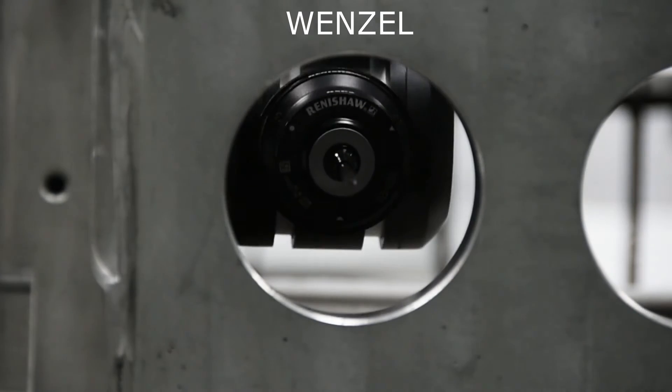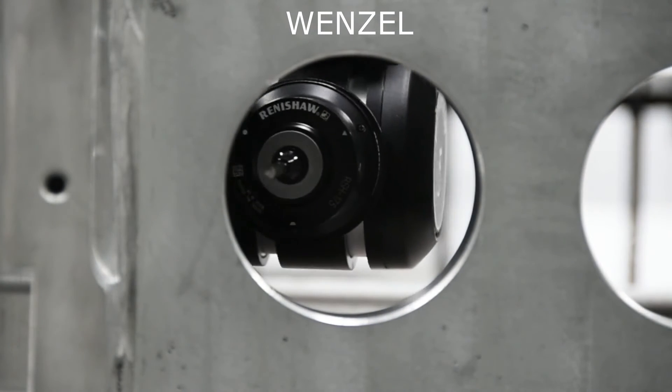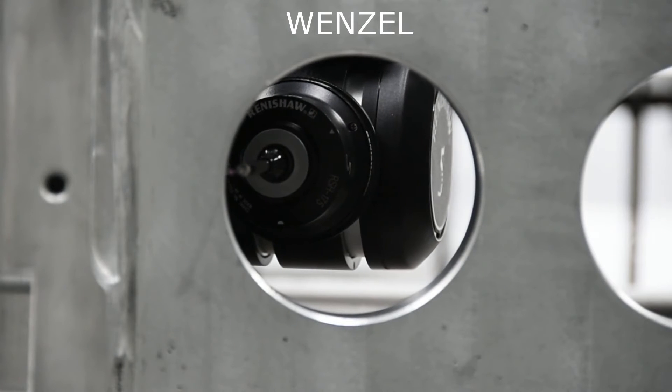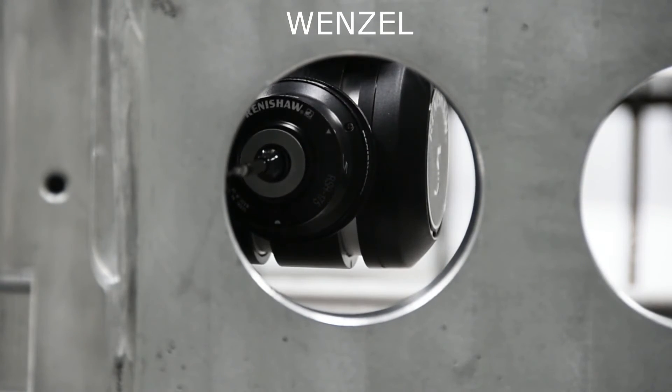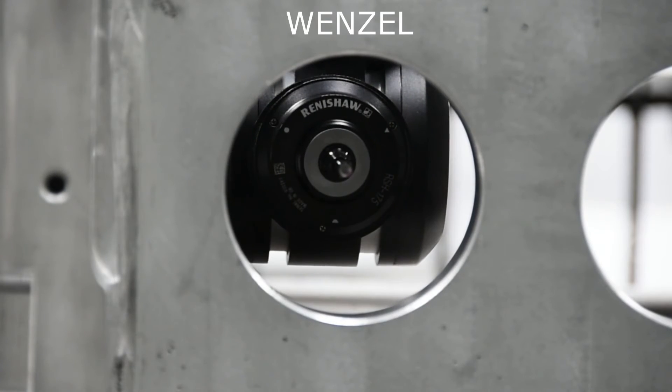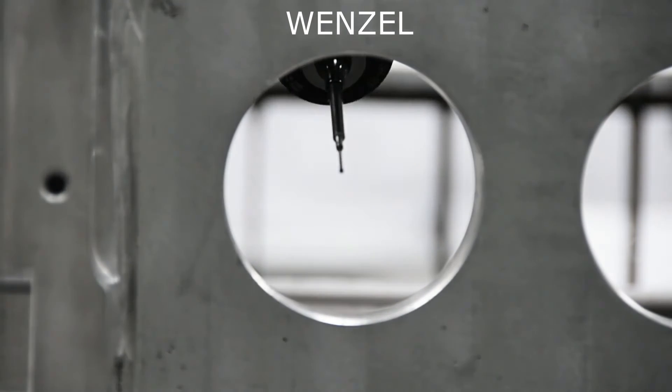The REVO 2 is the only scanning system for coordinate measuring machines that simultaneously controls the movement of three machine axes and two measuring head axes, and collects workpiece data via touch probes and surface roughness touch probes.